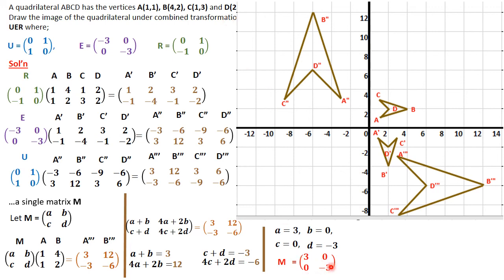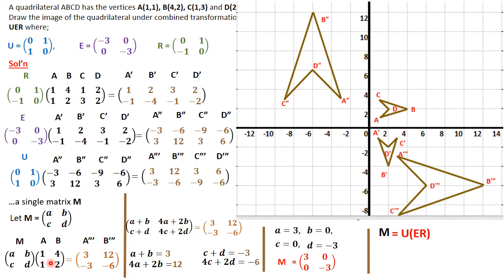That means if you pre-multiply matrix M with coordinates A, B, C, D you will straightaway get A''', B''', C''', D''', saving you the hassle of doing each step separately. The last remark: M clearly equals U times the combined matrix ER. So alternatively, you can get M simply by first computing E times R, and that result is then pre-multiplied by U.